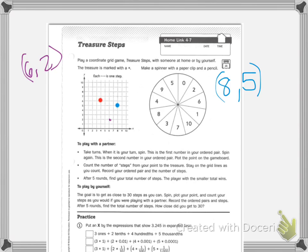There's her. Then it says count the number of steps from your point to the treasure. Stay on the grid lines as you count. Record your ordered pair and the number of steps. So mine would be how many am I from? 1, 2, 3, 4. So this is at 4, 6. So I am 4, 5. I am 6 steps away. So right underneath my ordered pair I can write 6 steps.